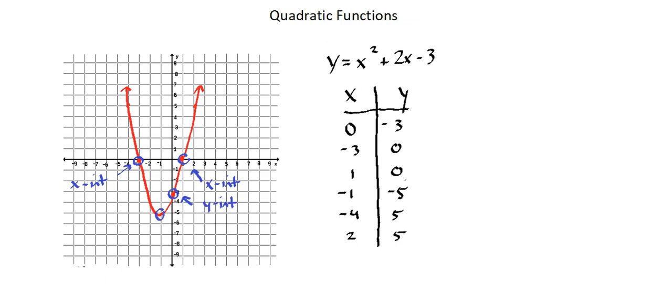We have the vertex, which in this parabola, which opens up, is the lowest point. In a parabola opening down, the vertex is the highest point.